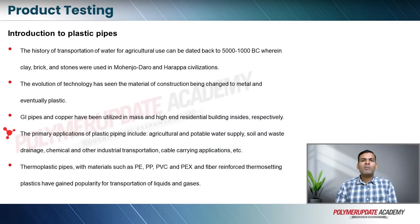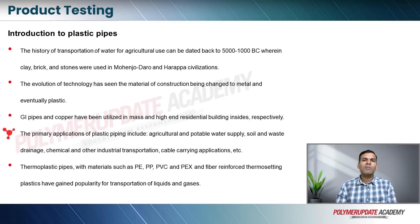The primary applications of plastic piping include agricultural and potable water supply, that is drinkable water supply, soil and waste drainage, and chemical and other industrial transportation. Plastic is becoming more and more popular in cases where metals corrode after a certain age. Cable carrying applications and cable jacketing are another popular application of plastics. Thermoplastic pipes with materials such as polyethylene, polypropylene, polyvinyl chloride, and cross-linked polyethylene, along with fiber-reinforced thermosetting plastics, have gained popularity for transportation of liquids and gases.